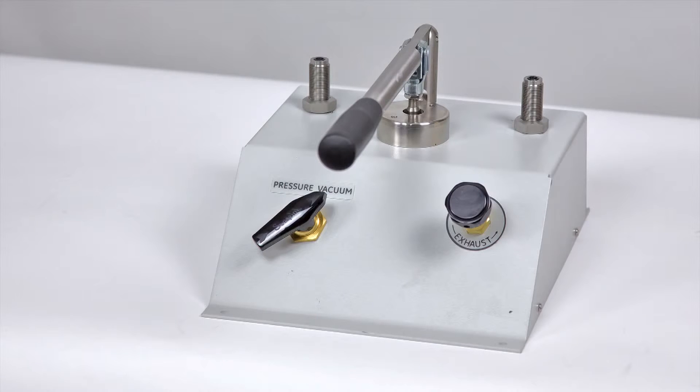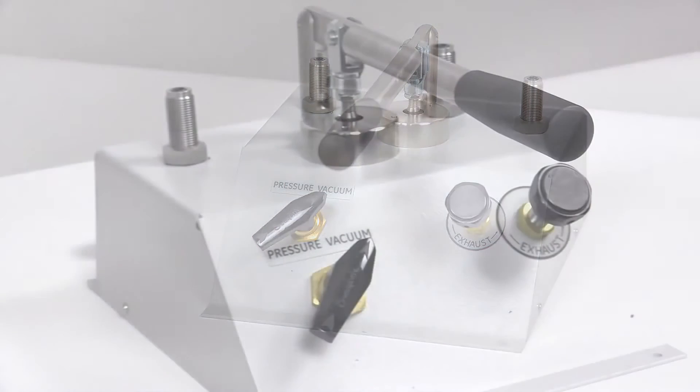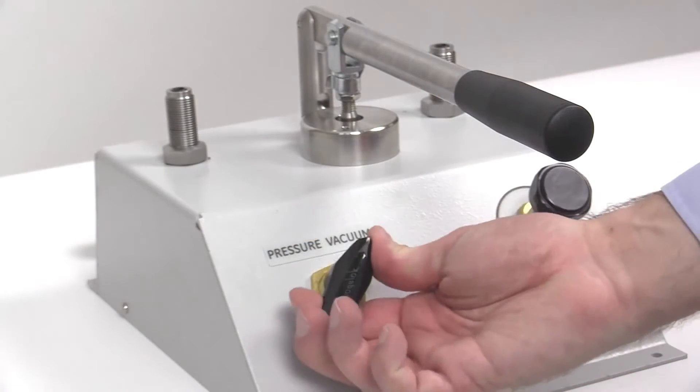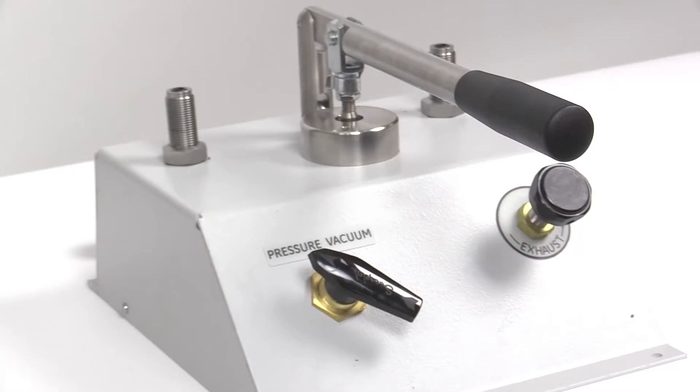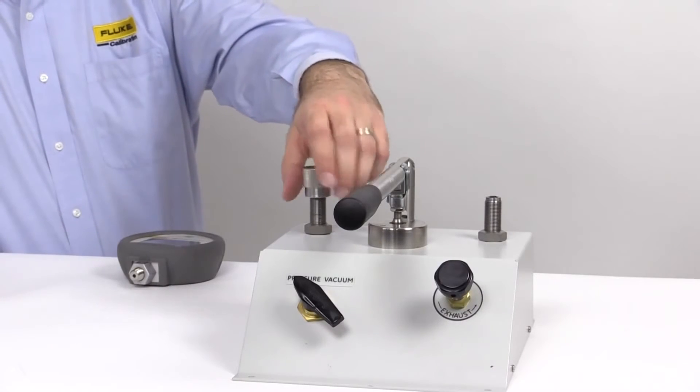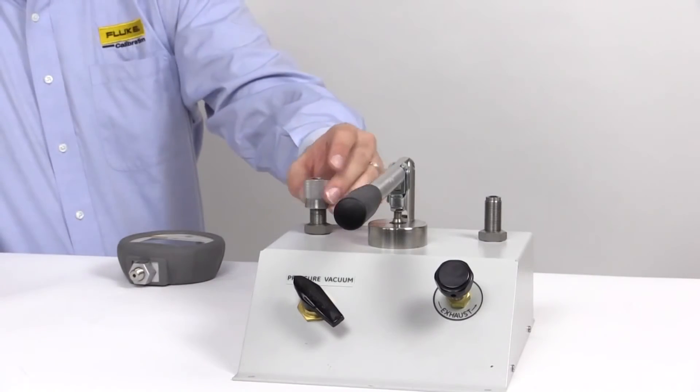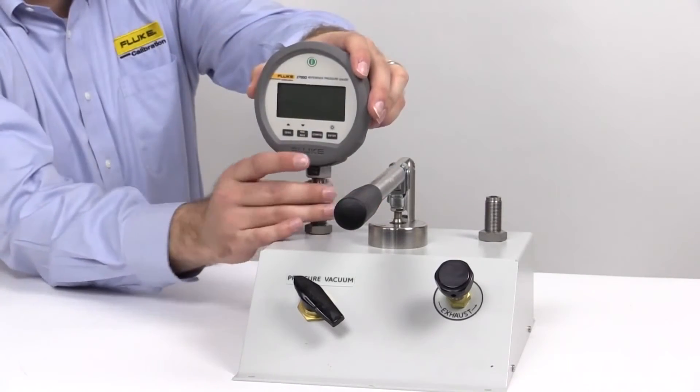The selector valve allows for easy switching between vacuum and positive pressure. The reference gauge and device under test are connected using the same technique as the P5515.